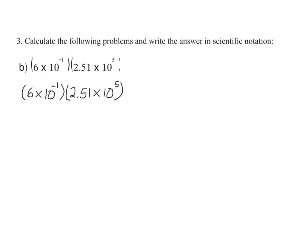For b: 6 times 10 to the negative 1 times 2.51 times 10 to the fifth. Again, we begin by multiplying the whole numbers individually — that is, 6 times 2.51 — and then multiply the base 10 exponents individually, that is 10 to the negative 1 times 10 to the fifth.